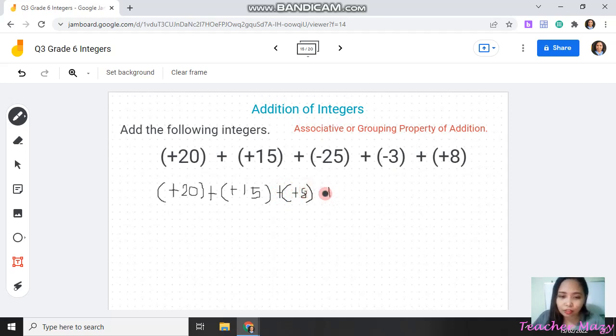Let's write the grouping symbol bracket to enclose this positive integer. Next is those integers with negative sign. So, that is negative 25 plus negative 3.